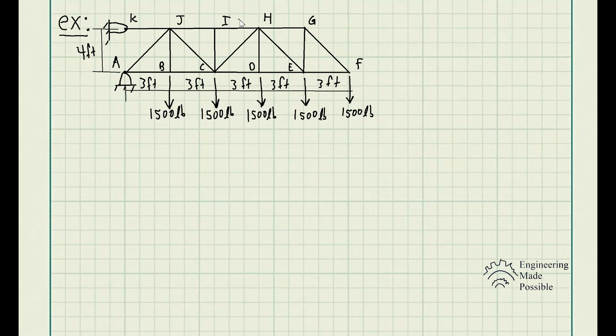So first, I'm going to go ahead and basically do the method of sections and split it at the part where two of the forces of the members that we're being asked to solve intersect. So we have at this imaginary line that I decided to draw. So we see that we have three members here, which is ideal because we have three static equilibriums that we could use to solve for the forces.